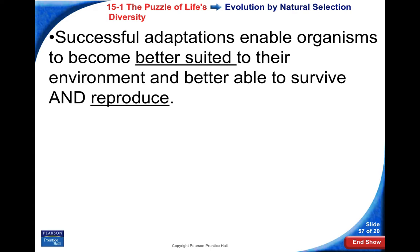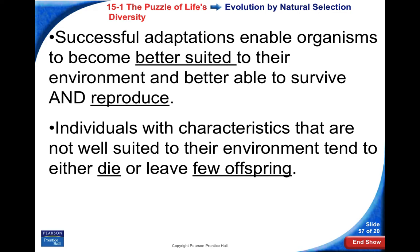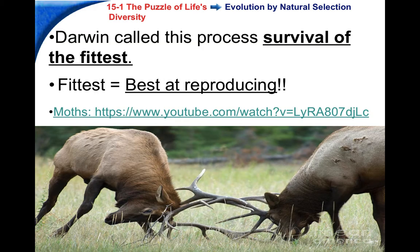Successful adaptations enable the organism to be better suited to their environment and give a better chance to survive and reproduce. Individuals with characteristics not as well suited to the environment tend to die or leave fewer offspring, so their genes don't get passed on as often. This is why it's called survival of the fittest — though Darwin didn't actually coin that phrase, another scientist did, and Darwin later adopted it. Being the fittest doesn't mean the fastest or strongest — it really just means the best at reproducing and passing genes to the next generation.